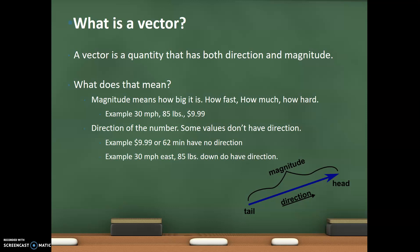What does that mean? Well, magnitude is how big something is. It's how fast, how much, how hard. For example, 30 miles an hour, 85 pounds, $9.99.